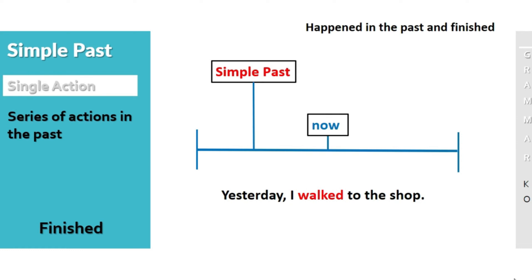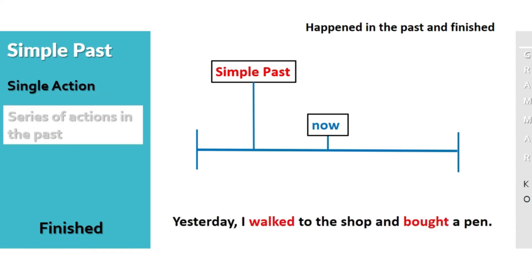A single action would be: 'Yesterday I walked to the shop.' A series of actions in the past would be: 'Yesterday I walked to the shop and bought a pen.' So we have a series of simple past verbs in that sentence.